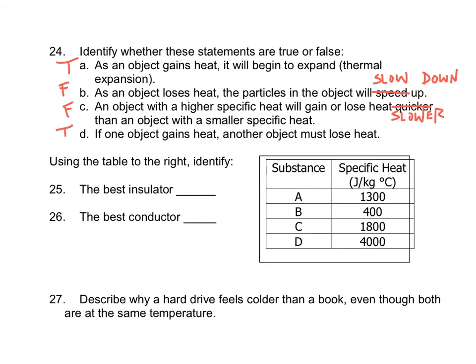Number 25: identify the best insulator and best conductor from the list. An insulator reduces energy flow, which corresponds to a high specific heat — so substance D with a specific heat of 4000 is the best insulator. A conductor transfers energy quickly and has a low specific heat — substance B with a specific heat of 400 is the best conductor.